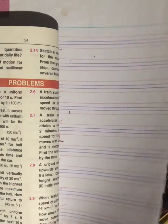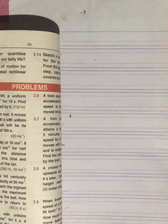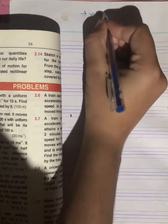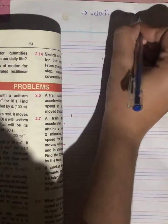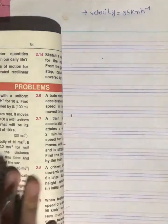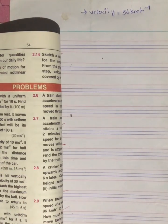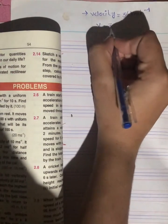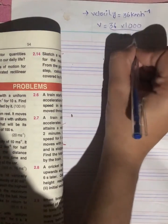So first thing, we have given data: velocity is 36 km per hour. First we will take this unit which we can use, the velocity in meter per second, so 36 multiplied by 1000 over 3600.